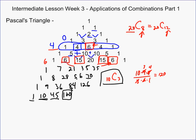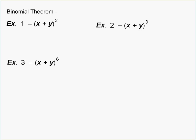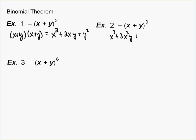That leads us to what's called the Binomial Theorem. The Binomial Theorem is a way of expanding a binomial to a power. For instance, x plus y squared is x squared plus 2xy plus y squared. If you do x plus y cubed, it would be x cubed plus 3x squared y plus 3xy squared plus y cubed.